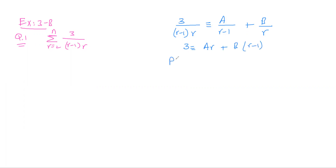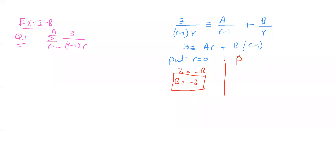I'll put r equal to zero. When I put r equal to zero, I get 3 equal to minus B, so B is equal to minus 3. Next I put r equal to one. When I put r equal to one, I get 3 equal to A, so A is equal to 3.